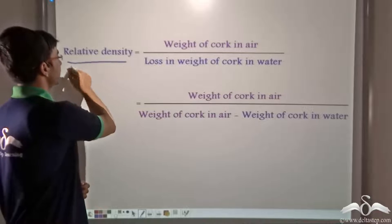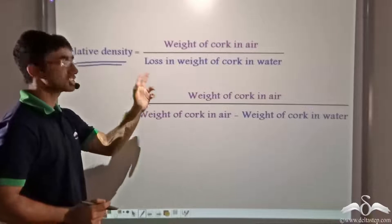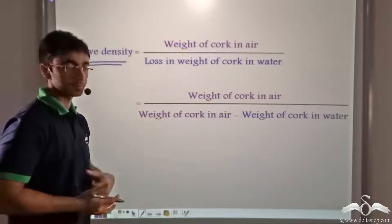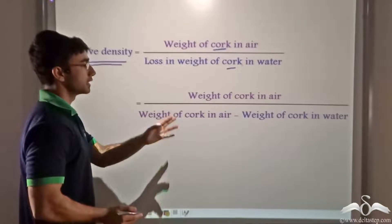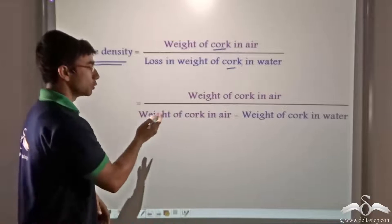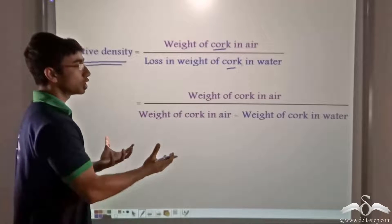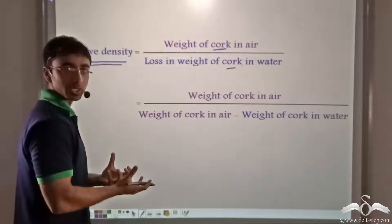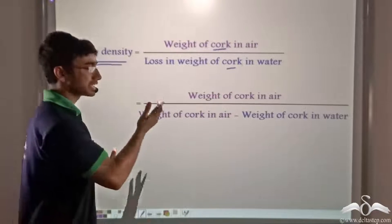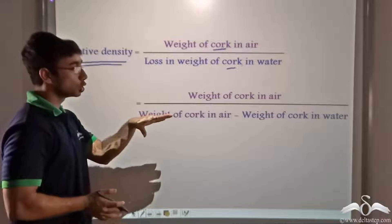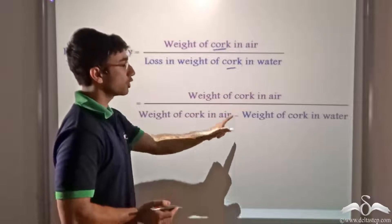We know the formula for relative density as weight of a solid in air divided by the loss in weight of the solid in water. In this case the solid is cork, so the formula will be: weight of cork in air divided by weight of cork in air minus weight of cork in water. However, we do not have these values directly.